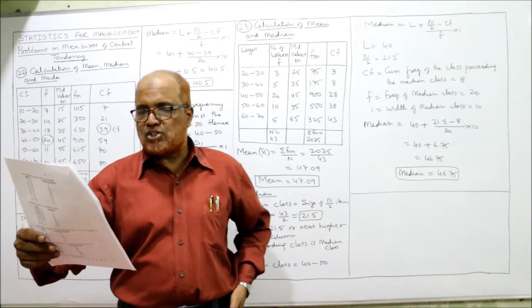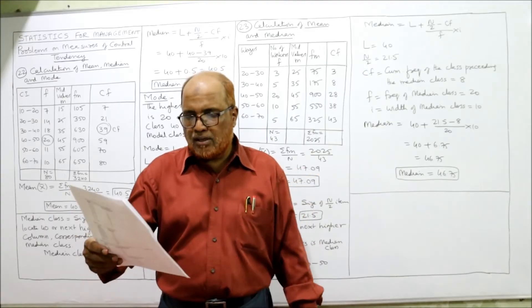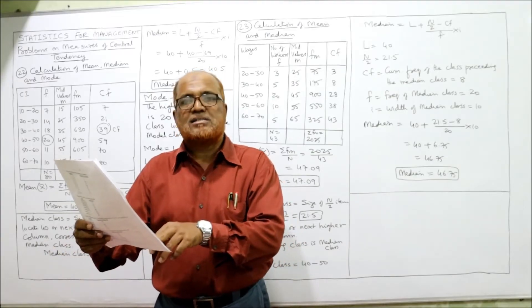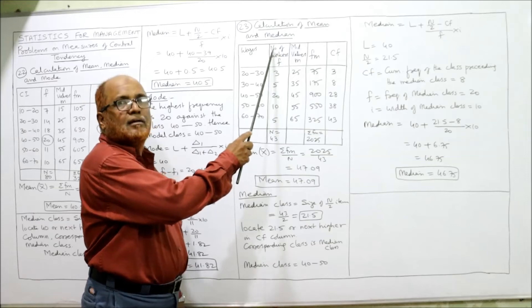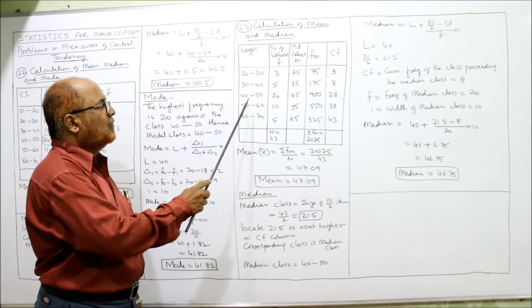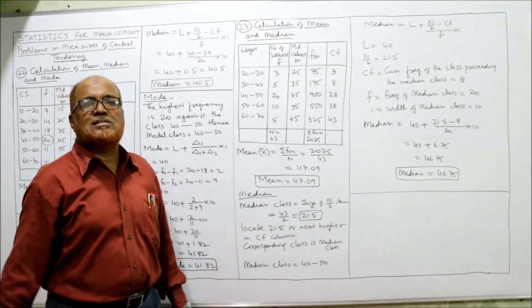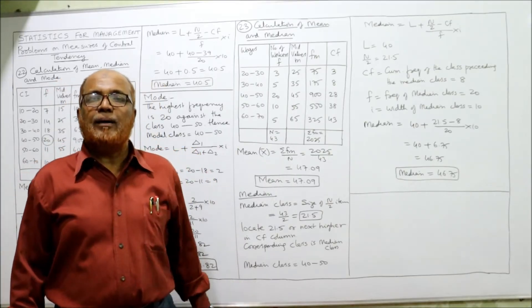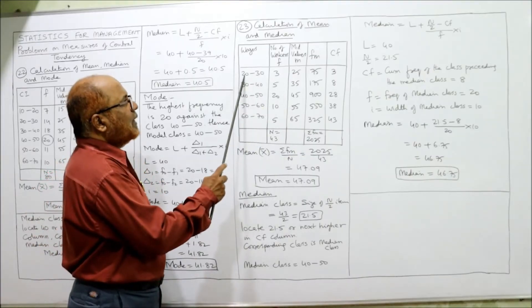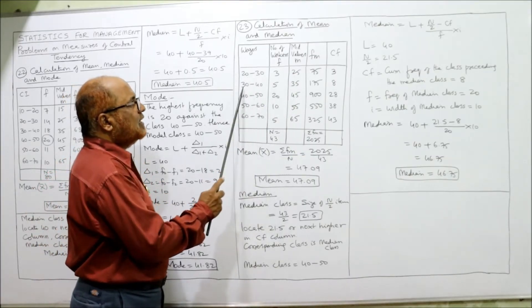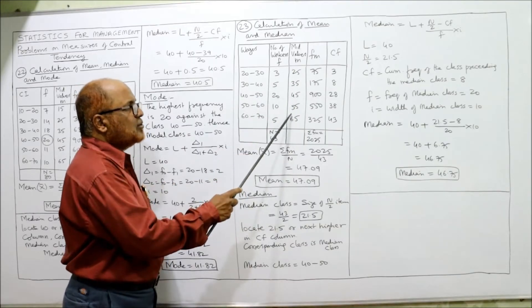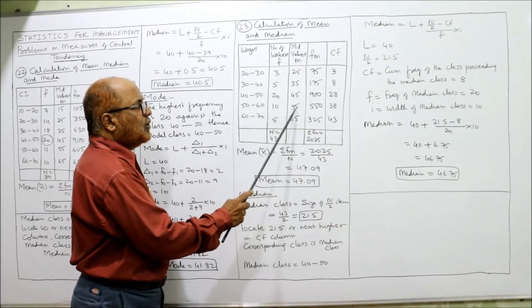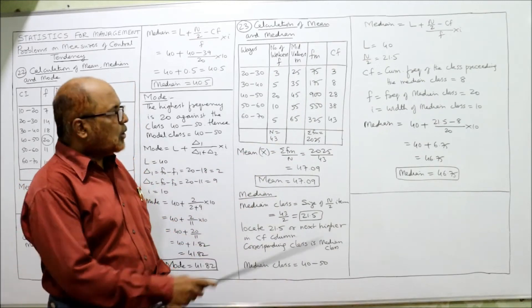The wages are given as a continuous series: 20–30, 30–40, 40–50, 50–60, 60–70, with respective number of workers (frequencies). We calculate mid values for the arithmetic mean: 20+30÷2 = 25, 30+40÷2 = 35, and so on. Then multiply f×m: 3×25, 5×35, 20×45, 10×55, 5×65. The total summation fm = 2025, and n = 43.